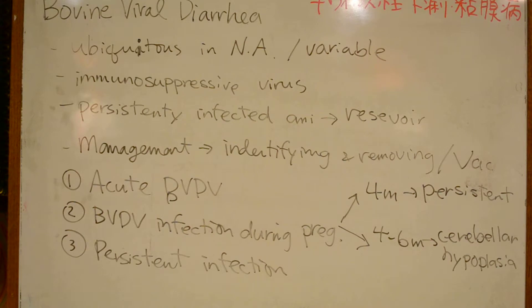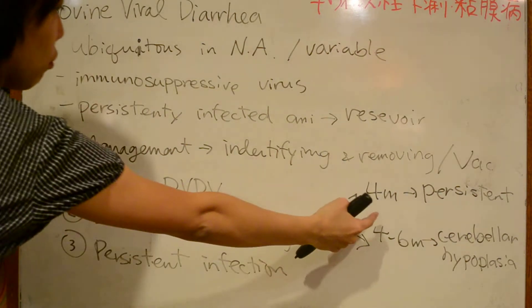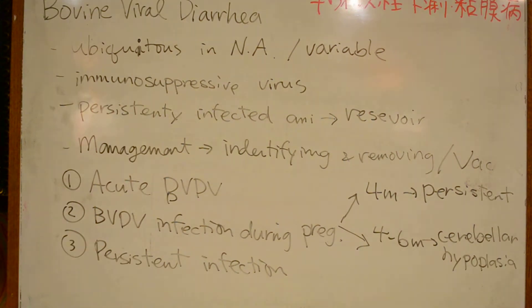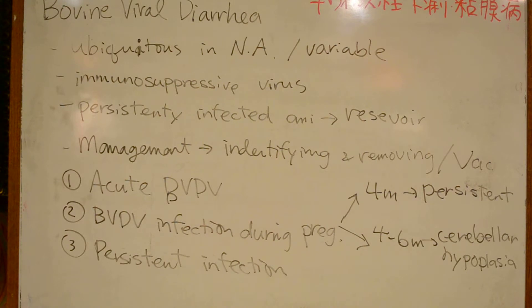The third category is persistent infection, resulting from infection during pregnancy. These animals shed large amounts of BVDV virus, infecting susceptible herd mates. Death before two years of age is common in persistently infected animals.